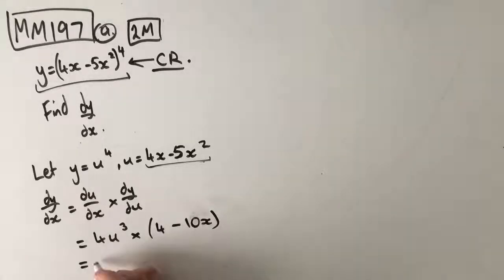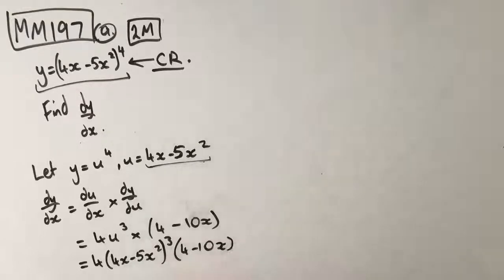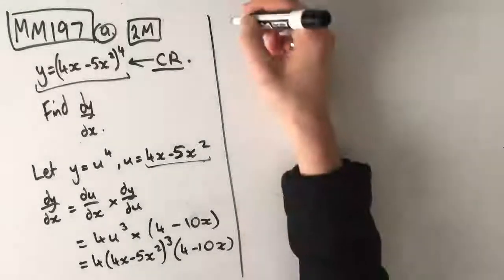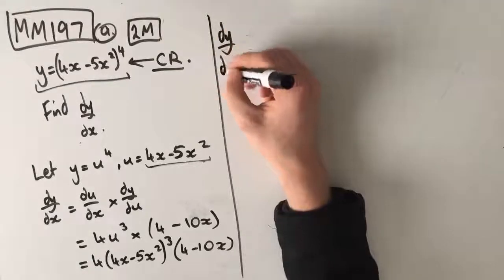Now from here, we can simply put our u value back in. 4x take 5x squared to the power of 3 times 4 take 10x. From here, guys, we can actually also simplify that even further.